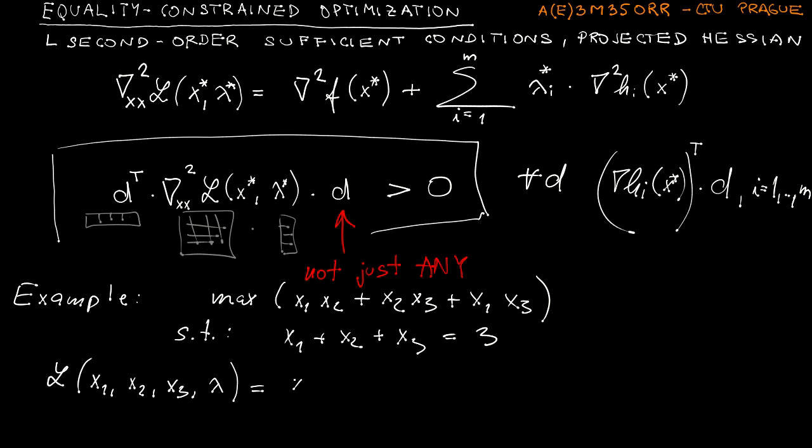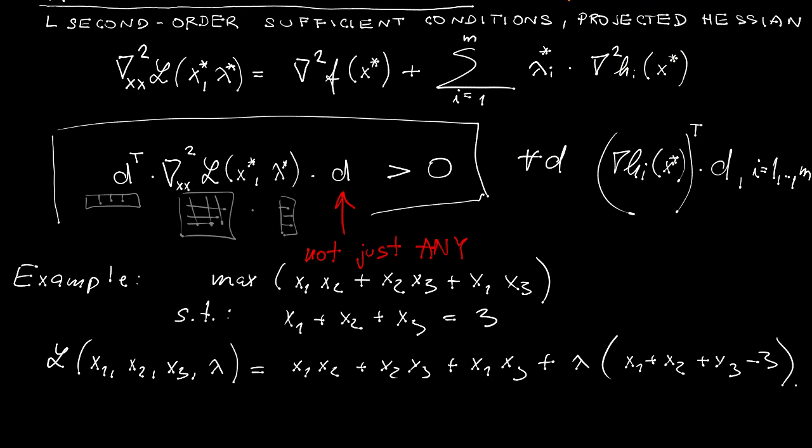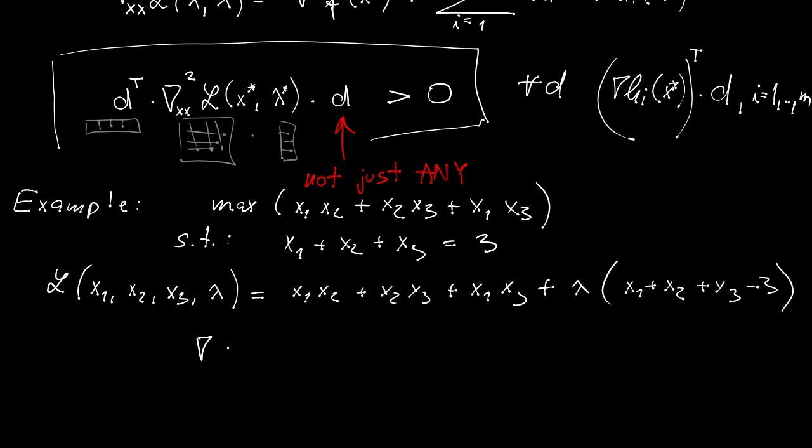Now you may write down the Lagrangian. This will be of course a function of x1, x2, x3, and lambda. We will only have a single equality here, so just a single Lagrange multiplier, and it's x1 x2 plus x2 x3 plus x1 x3 plus lambda times (x1 plus x2 plus x3 minus 3). Now I will leave it up to you to find out the gradient of L. Simply find the gradient of L on your own. It will be a vector composed of four entries, and put it equal to 0, and from this you will have x1 star, x2 star, x3 star, and lambda star.